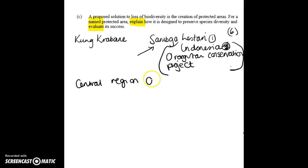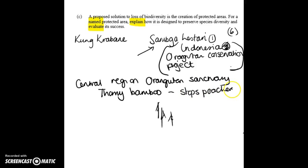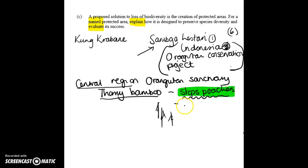The central region is an orangutan sanctuary with thorny bamboo around the outside. This protects the sanctuary by stopping poachers — we're not just describing the central region with thorny bamboo, we're explaining why the thorny bamboo is there.